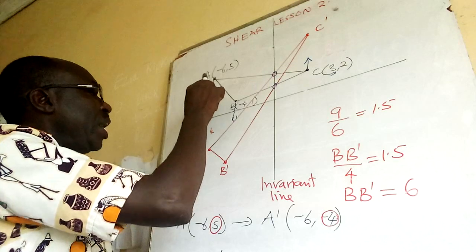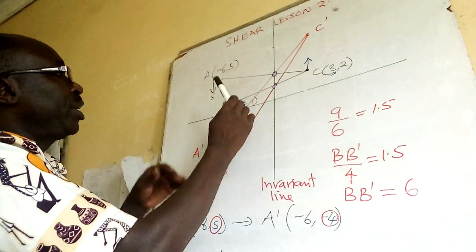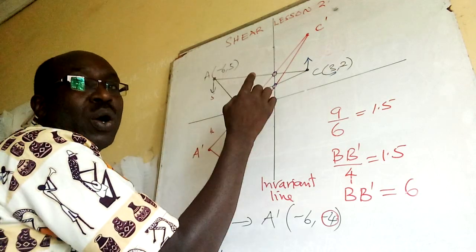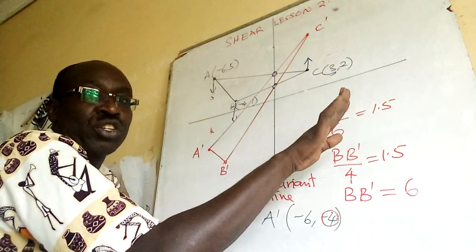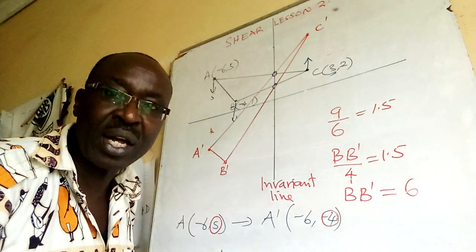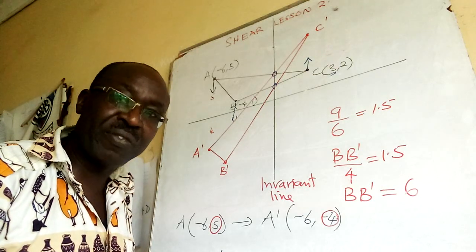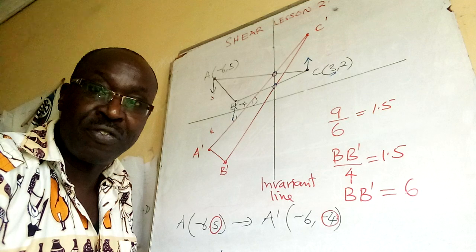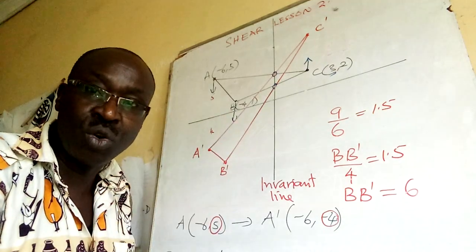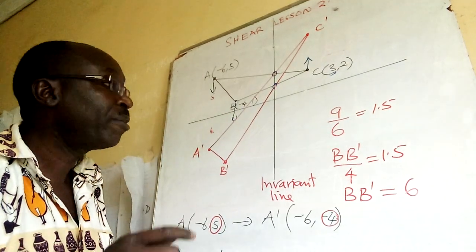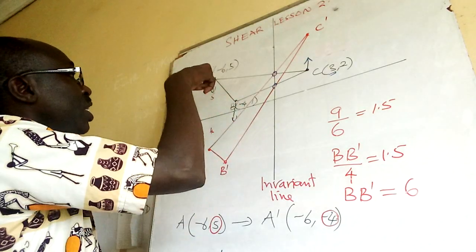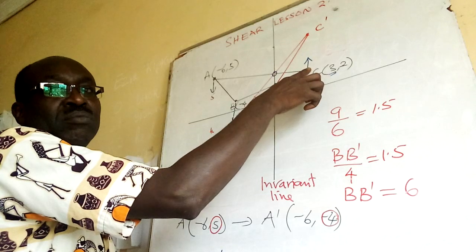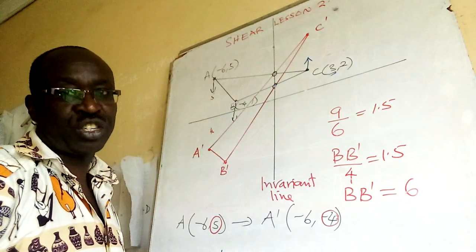Now A and B are on one side of the invariant line. What about C, which is on the opposite side? Remember the lever system in physics — when effort goes on one side, the load goes on the opposite side. So A and B have shown their movements going down with blue arrows, but C will move in the opposite direction.